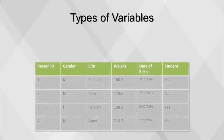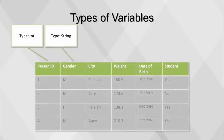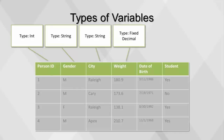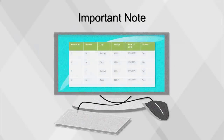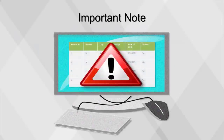Here are the variable types for our table. Person ID is a discrete numeric variable. Gender and city are string variables. Weight is a fixed decimal variable. Date of birth is a date. And student is boolean. Software packages can automatically assign fields with data types, and sometimes these can be assigned incorrectly. Examination of these data types is necessary to ensure proper utilization further downstream.